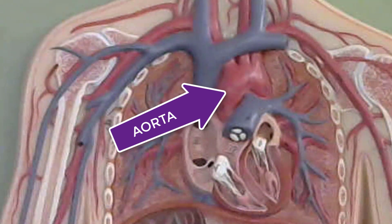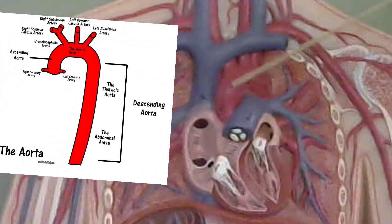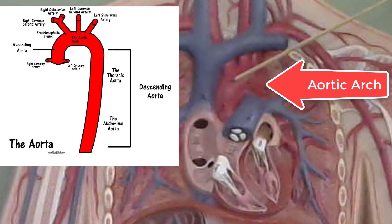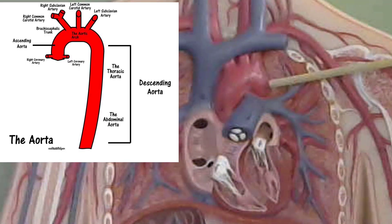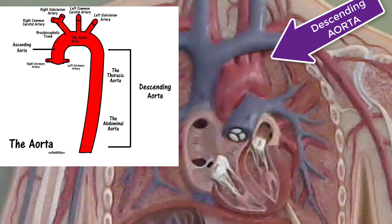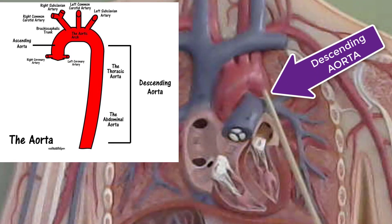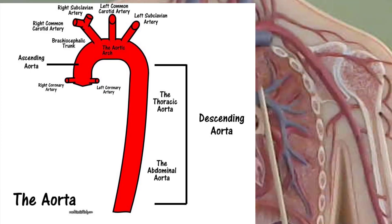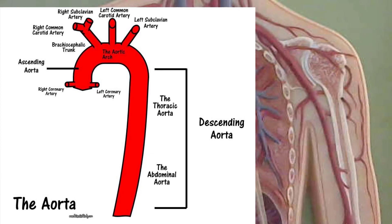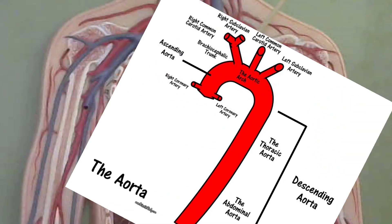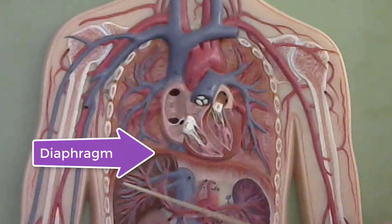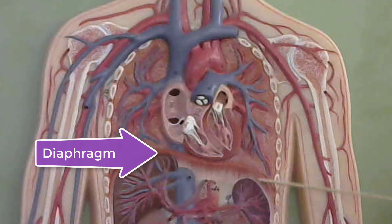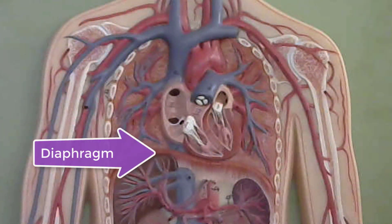We have different regions of the aorta. This is the ascending aorta, then we have the aortic arch. After the aortic arch, we get the descending aorta. The descending aorta is going to go through the thoracic cavity. The portion of the descending aorta that goes through the thoracic cavity is called the thoracic aorta. The thoracic aorta goes through the diaphragm, and when it does, it becomes the abdominal aorta.